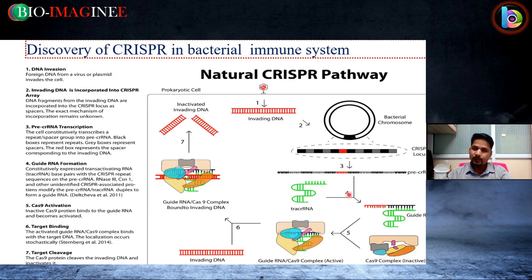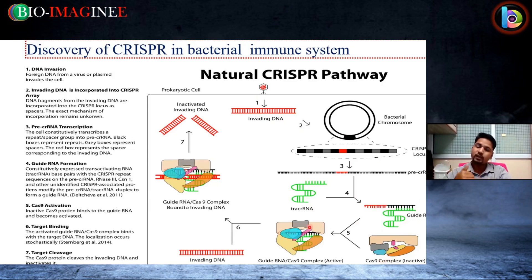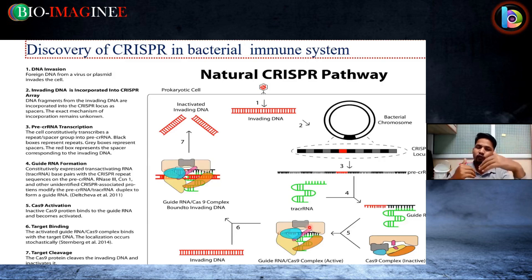There are many Cas proteins — Cas9 through Cas13 exist — but now three are in common use. Cas9 is the type 2 system. In the type 2 system, Cas9 becomes active and the Cas9 nuclease, at three base pairs upstream of the protospacer adjacent motif PAM sequence, will chop up the viral DNA.